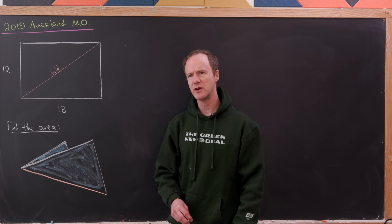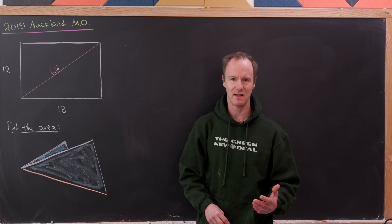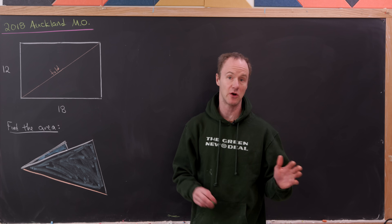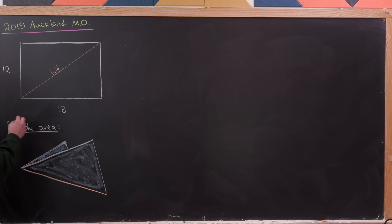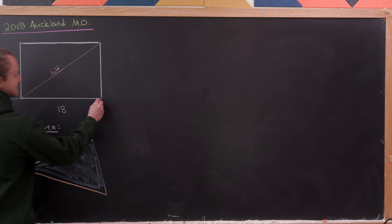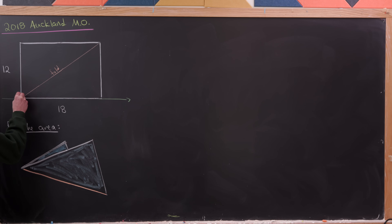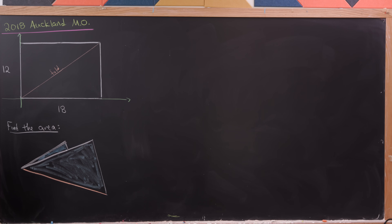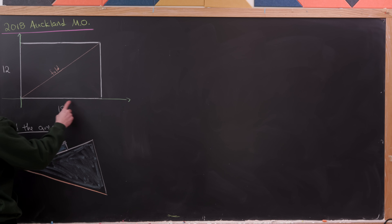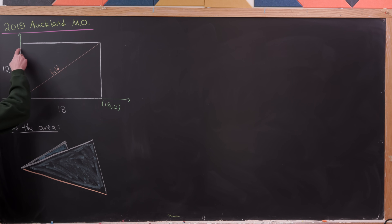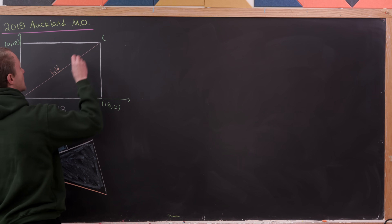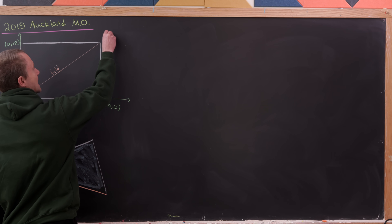There are probably several ways to do this. We'll use an approach that highlights a nice formula which isn't super well known but is worth knowing. We'll place everything in the Cartesian coordinate plane. Since the sheet has length 18, one corner is at (18, 0); since it has length 12, another is at (0, 12); and the opposite corner is at (18, 12).